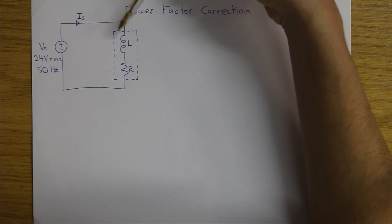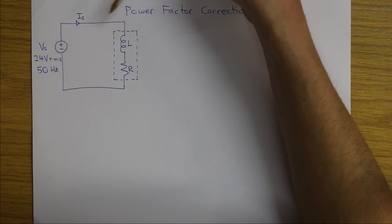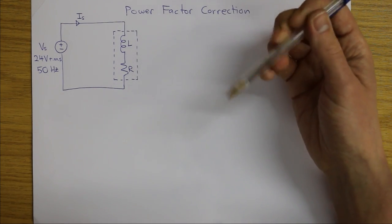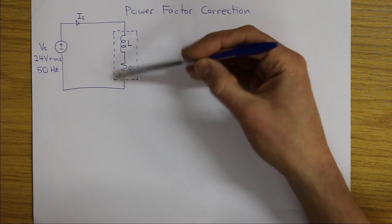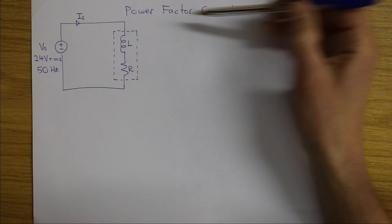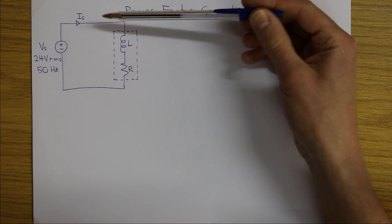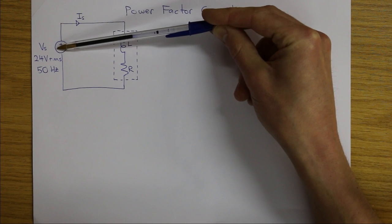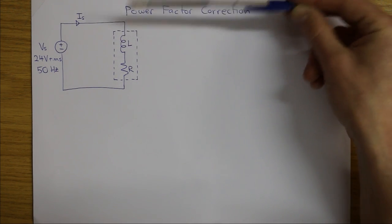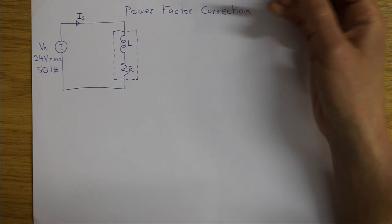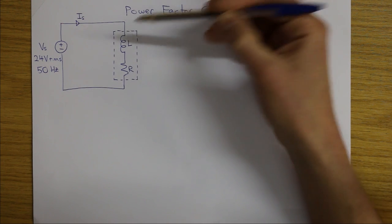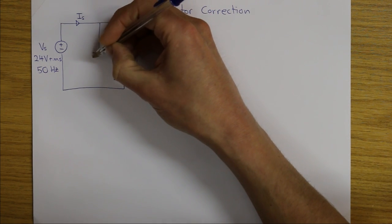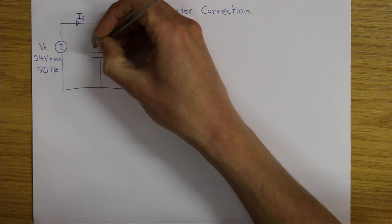We don't know the size of Is unless we know R and L, but assuming L isn't zero, Is will be out of phase with Vs. The basic idea in power factor correction is to get the current in the load perfectly in phase with the voltage — that's when you get the most bang for your buck in terms of power transfer. Every amp drawn gives maximum power. We achieve this by adding a compensating capacitor C in parallel with the load.